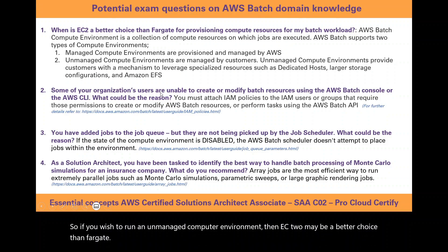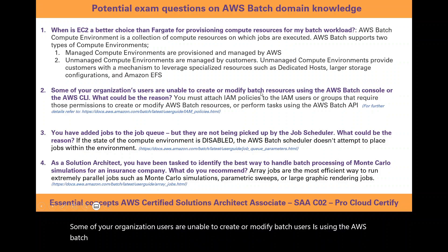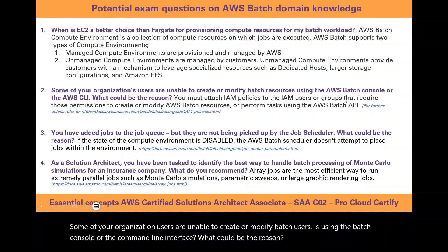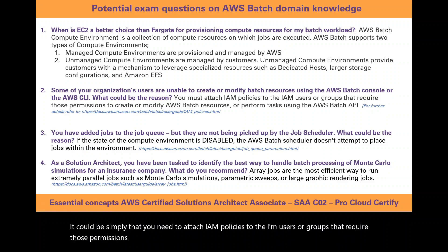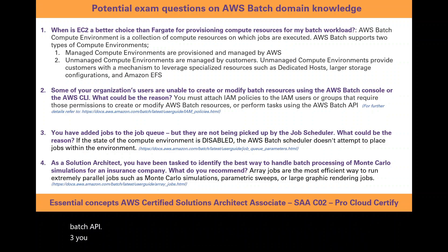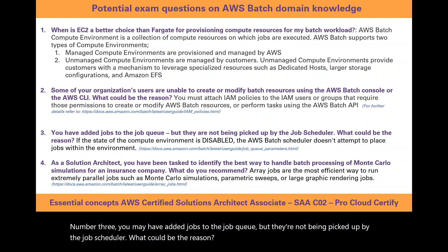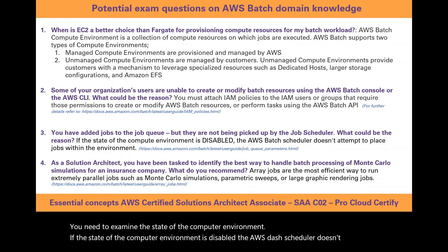Another scenario: some organization users are unable to create or modify batch resources using the AWS Batch console or the AWS CLI. The reason could simply be that you need to attach IAM policies to the IAM users or groups that require permissions to create or modify AWS Batch resources or perform tasks using the AWS Batch API. A third scenario: you have added jobs to the job queue but they are not being picked up by the job scheduler. You need to examine the state of the compute environment — if the state of the compute environment is disabled, the AWS Batch scheduler does not attempt to place jobs within the environment.